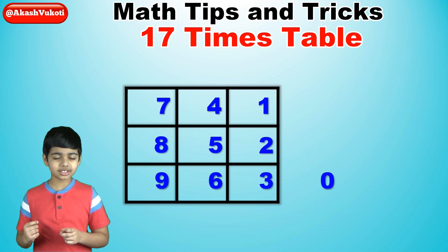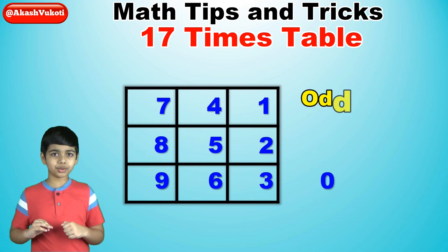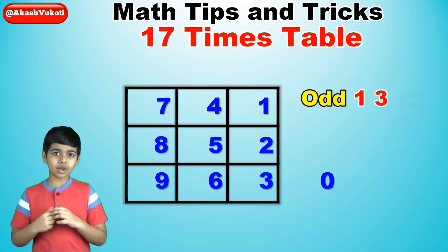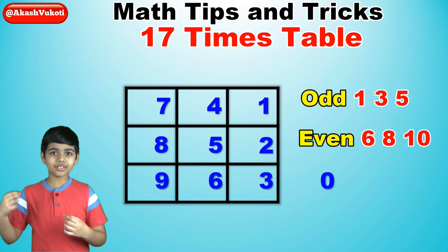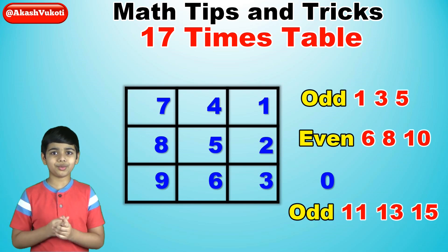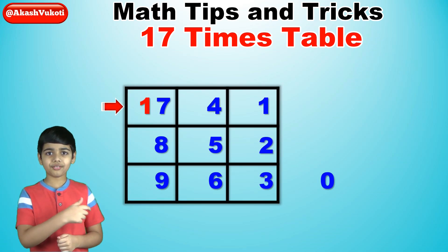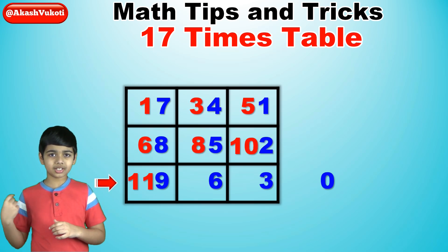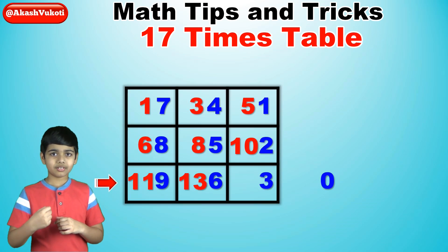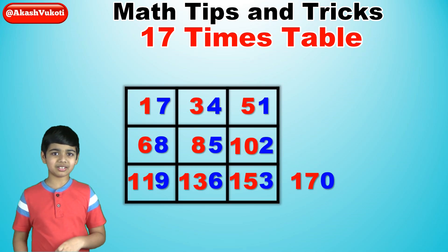Next, for the 10s digits, we'll just follow a simple pattern. We write 3 odd numbers in the first row, then 3 even numbers in the second row, and then 3 odd numbers in the third row. So starting with the odd numbers: 1, 3, 5; even numbers: 6, 8, 10; odd numbers: 11, 13, 15. And then we place a 17 next to the zero outside of the box.